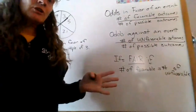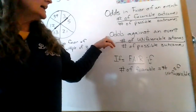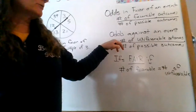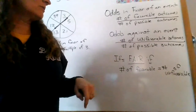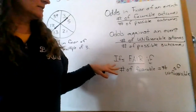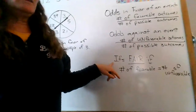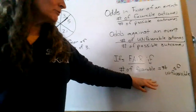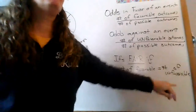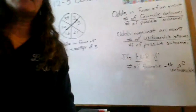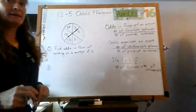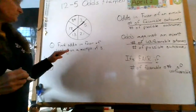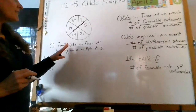Odds in favor of an event: that means the number of favorable outcomes over the number of possible outcomes — very similar to what we've already been doing. Odds against an event: the number of unfavorable outcomes over the number of possible outcomes. For fairness: something is fair if the number of favorable outcomes equals the number of unfavorable outcomes — they have to be the same.